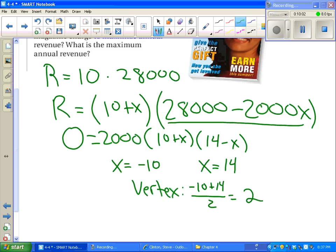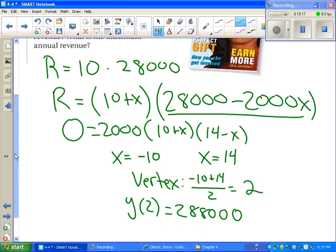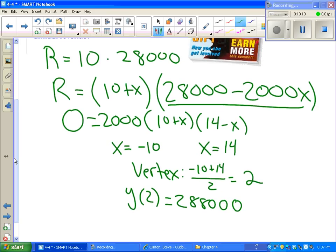To find the y value, which would be our maximum, we just plug in 2. Be sure you get the same number I get. I get 288,000. Not much more than they were getting by charging $10, but by increasing the price of the magazine by $2, their revenue would go up by about $8,000, which is good for them because businesses want to make money.